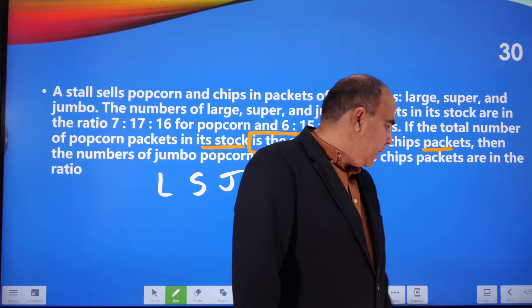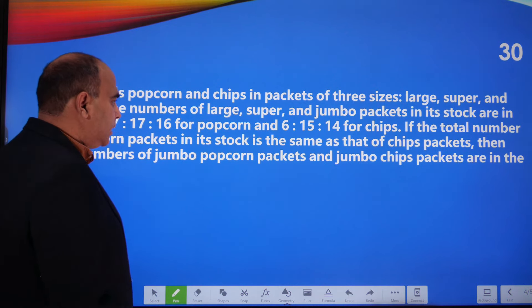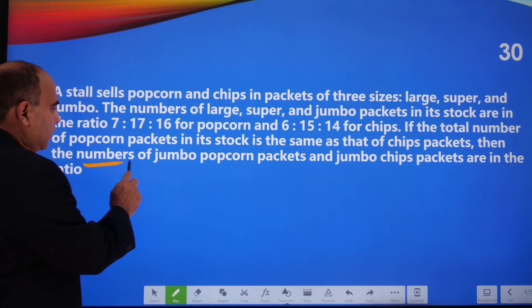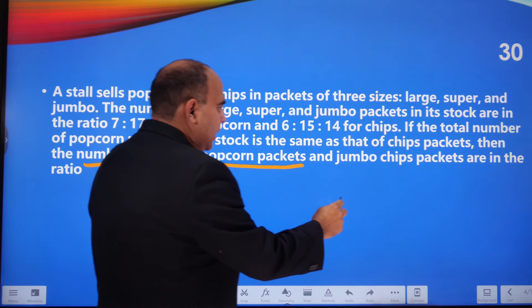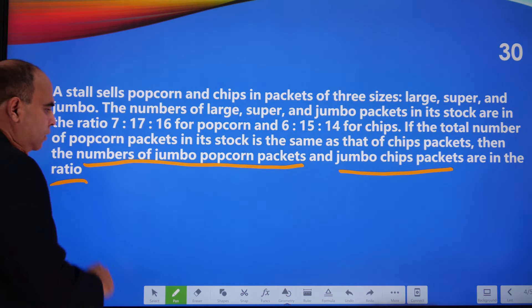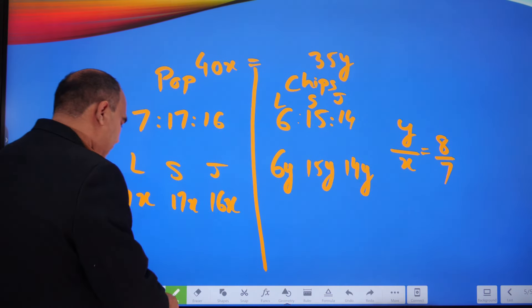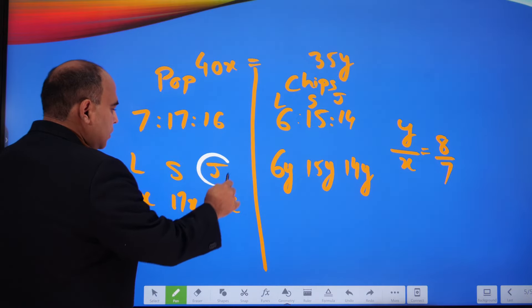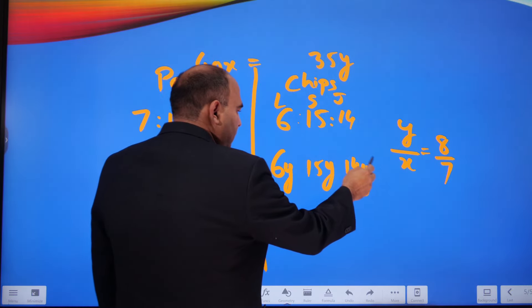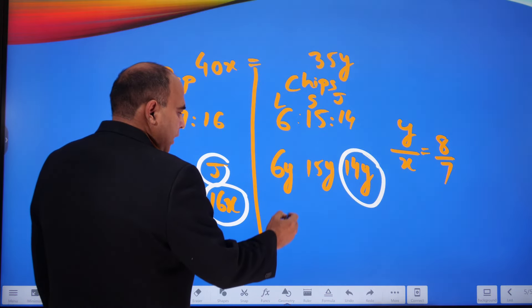That means if y is 8, x is 7. Now the question being asked is: the number of jumbo popcorn packets and jumbo chips packets are in the ratio. So they're asking us the ratio of jumbo popcorn packets, which is 16x, and jumbo chips packets, which is 14y.